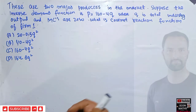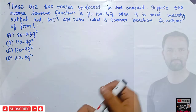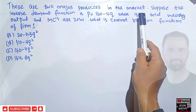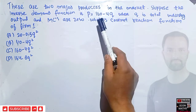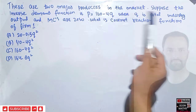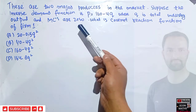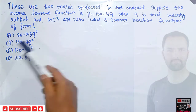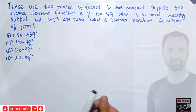In this video we will try to solve another question that was asked by a brother on the Econ Maths Telegram channel. The question is: there are two major producers in the market. The inverse demand function is given by P = 160 − 4Q, where P is the price and Q is the industry output. Marginal cost for both firms is zero. We have to find the Cournot reaction function of Firm 1 from the given options.